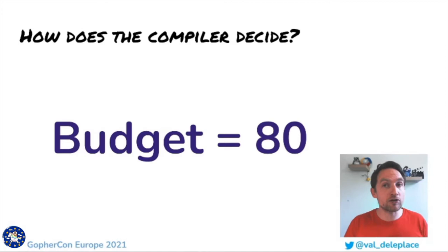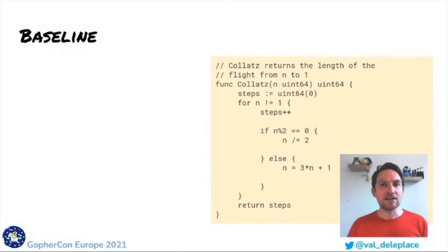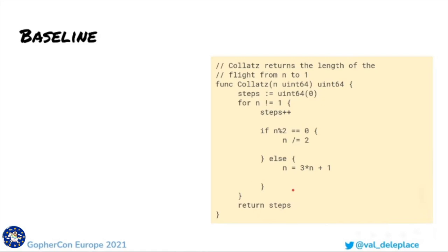Let's say that my program can run in two modes: debug, where many debug lines are printed to the standard error, and production, where the debug lines are not printed. This sample function computes the sequence of the Collatz conjecture from a positive integer n to the final value 1 and returns the number of computation steps. If you have never heard of the Collatz conjecture, it's fine — it's just an arithmetic computation of a sequence of integers.